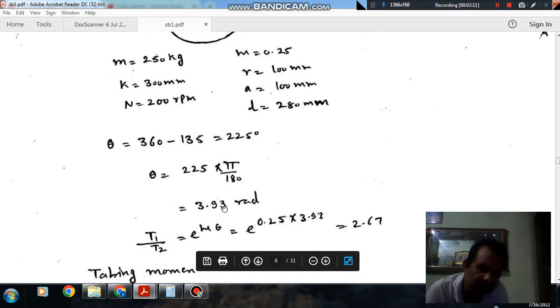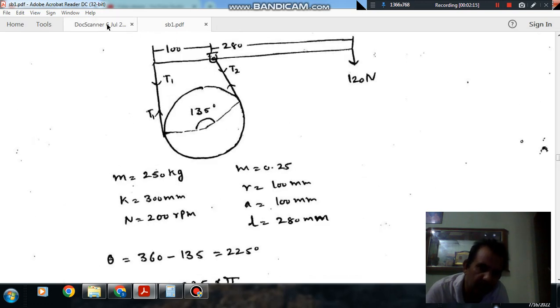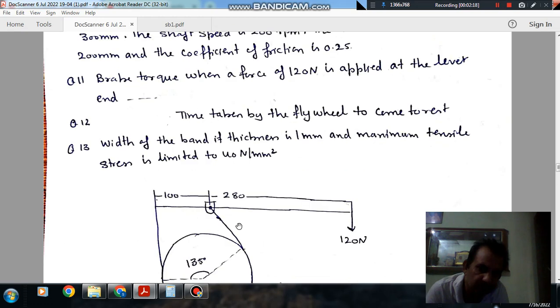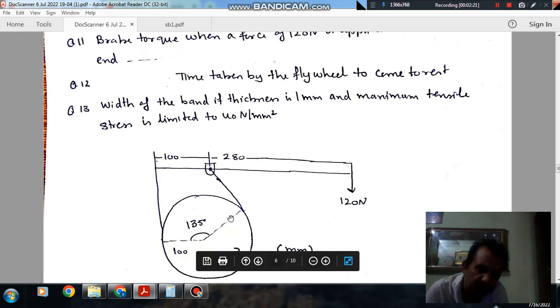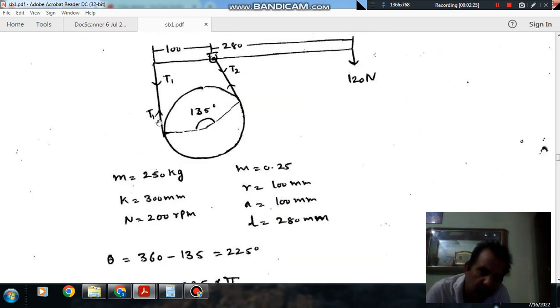Converting this angle theta into radians by multiplying by pi and dividing by 180 gives 3.93 radians. As the rotation is anticlockwise, this will be T1 and this will be T2, opposite to rotation. The rotation is in this direction, so the braking torque has to be applied in opposite direction. When T1 is more and T2 is less, then the braking torque is applied. So this is T1, this is T2.